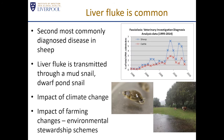Liver fluke is common — it's the second most commonly diagnosed disease in sheep and is also commonly diagnosed in cattle. It's the most common reason for cattle livers to be condemned at the abattoir. The parasite is transmitted through an intermediate host: a mud snail called the dwarf pond snail, which, as the name suggests, likes to live in and around bodies of water — particularly on the surface of mud around the margins of water bodies.